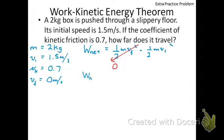That leaves us with net work equals 0 minus, and if I plug everything in, it's going to be 1/2 times 2 kg times the initial velocity of 1.5 m/s squared. If we do that, you're going to get negative 2.25 joules. That's going to be part 1 of our problem.